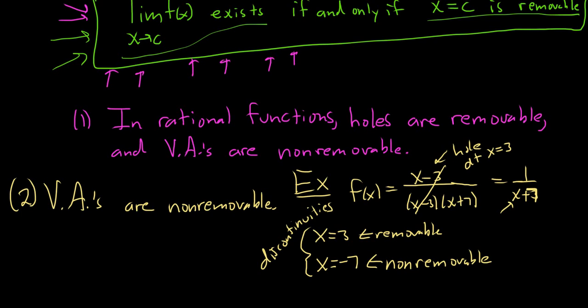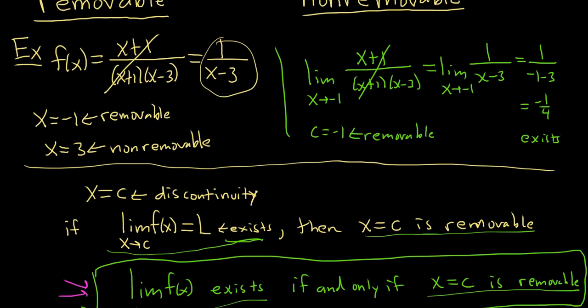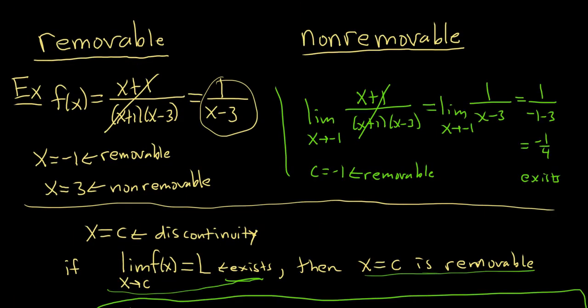In the videos that follow, you'll see examples using this limit definition, examples with trig functions, and more examples with rational functions. The key intuition is that we remove a discontinuity via the cancellation process, and if we can't remove it, it's non-removable.